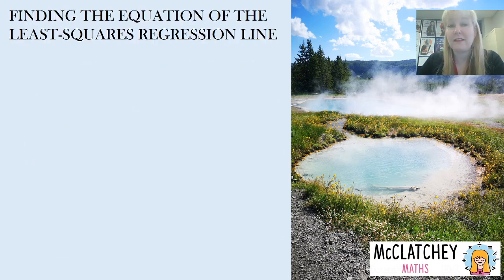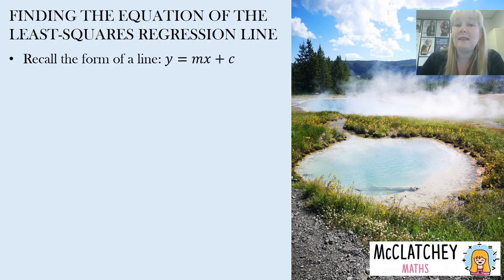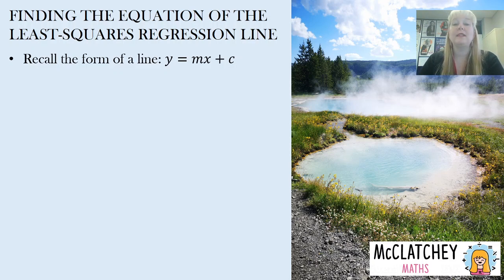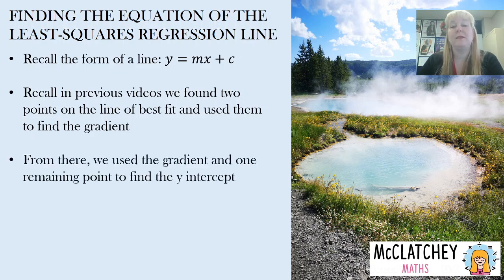Now let's talk about how to find that formula. You would recall from grade eight that the form of a line is y equals mx plus c, where m is the gradient and c is the y-intercept. We've talked in previous videos about how to find this using a line of best fit, but we don't want to go down that road with an LSR line — it's quite different.